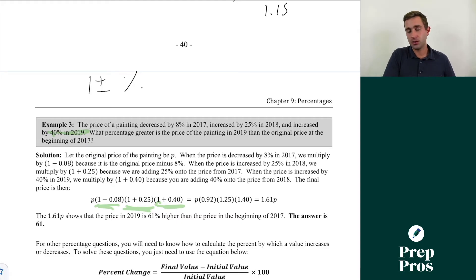What percent greater is the price of the painting in 2019 than the original price at the beginning of 2017? We could say p is our original price. We could simply say p times that 1 minus 0.08 is 0.92, that 1 plus 0.25 is 1.25, and that 1 plus 0.4 is 1.4. So we're simply going to multiply all of those values together, and then we're going to get 1.61p. But if we get our final value, it's the difference away from 1, which is going to tell us the amount we increased or decreased.